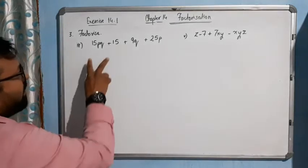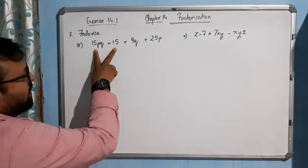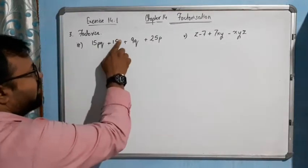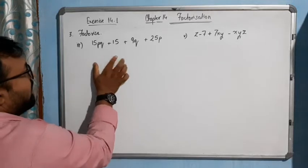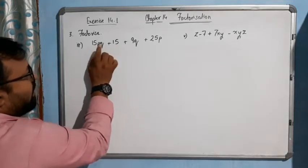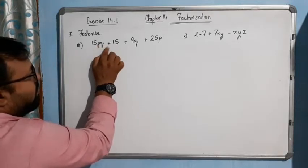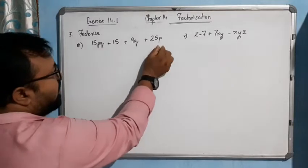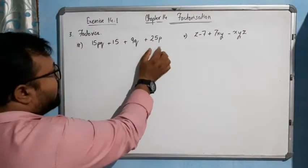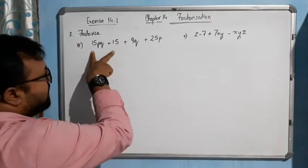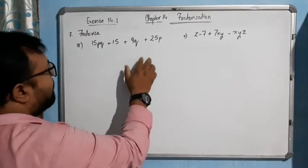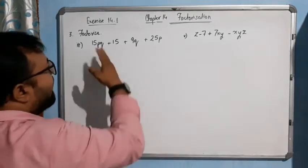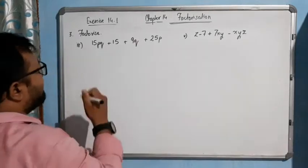See, if we try to take common here without interchanging the terms, we can take 15 common and what is left behind is PQ plus 1. But there is no PQ in the remaining terms, so we can't take common from that side. So now what we will do — we will interchange the terms here.